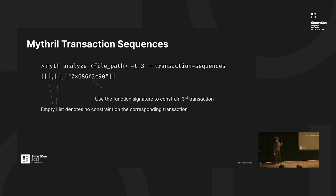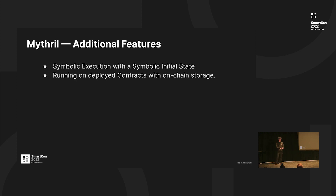With Mythril, you can also constrain transaction sequences. If you're interested in finding whether a program property holds in your third transaction, all you have to do is write the function signature in the final transaction — you can also write a list of function signatures. An empty list denotes that the transaction is unconstrained. So in this case, the first two transactions are unconstrained and the third transaction is constrained with a specific function signature. Mythril also has additional features such as symbolic execution with a symbolic initial state, and you can run it on deployed contracts using on-chain storage.